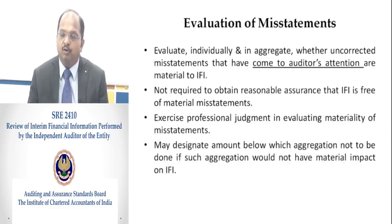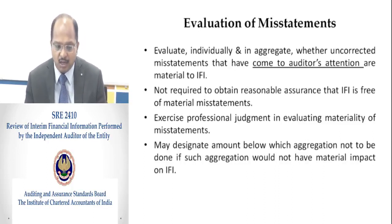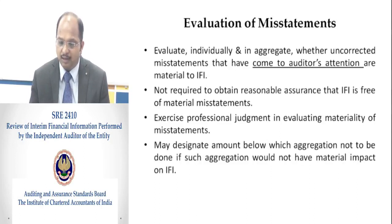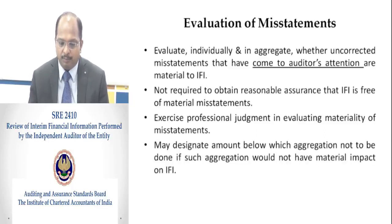The auditor must evaluate individually and in aggregate whether uncorrected misstatements that have come to the auditor's attention are material to the interim financial information. The auditor is not required to obtain reasonable assurance that interim financial information is free of material misstatement. The auditor must exercise professional judgment in evaluating materiality of misstatements and may designate an amount below which aggregation need not be done, if such aggregation would not have a material impact on the interim financial information.